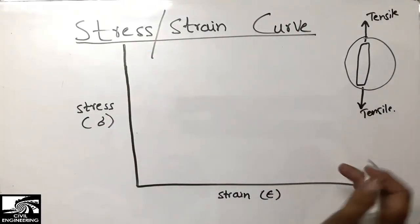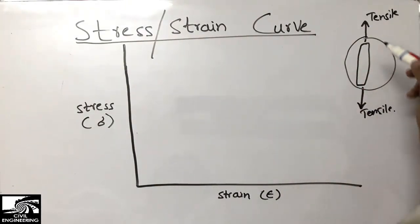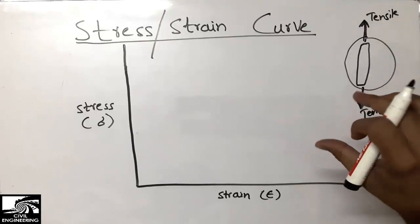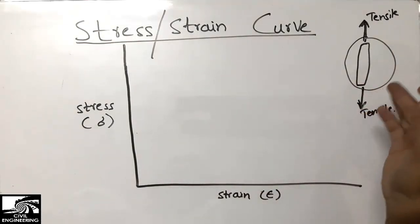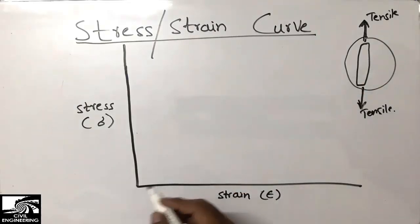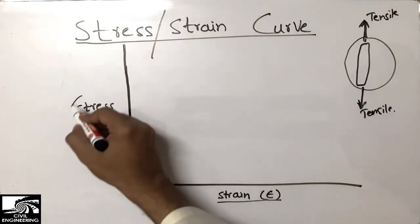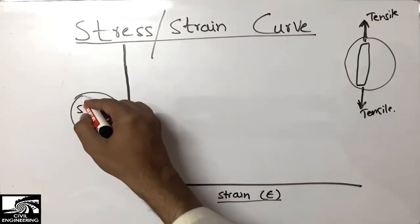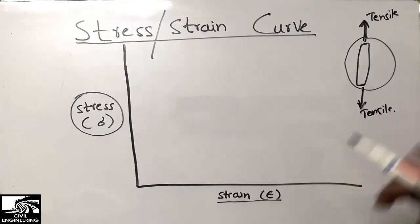After placing this bar in the Universal Testing Machine, the load is applied and kept increasing in both directions, and the bar is stretching. We are going to draw the curve according to the increasing load on this steel bar. On the x-axis we write strain, because it is the independent parameter, and stress we write on the y-axis.